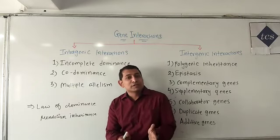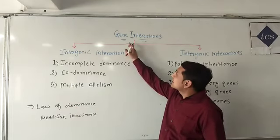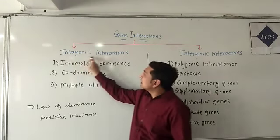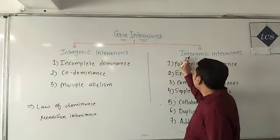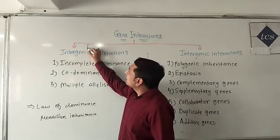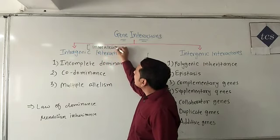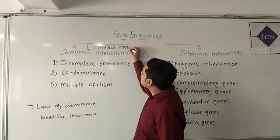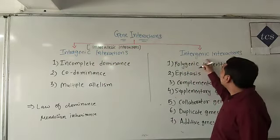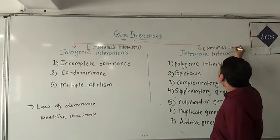But there are deviations from such inheritance patterns. They are enlisted as gene interactions, classified in two categories: intragenic interactions and intergenic interactions. Intragenic interactions are also known as interallelic interactions, whereas intergenic interactions are called non-allelic interactions.